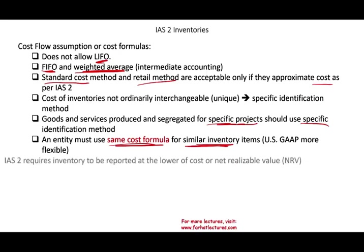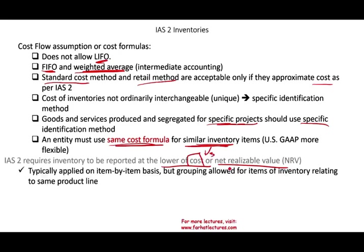IFRS and IAS 2 require inventory to be reported at lower of cost or NRV — net realizable value. You compare your cost versus NRV and select whichever is lower. So after you determine your inventory using FIFO or weighted average, you then assign a dollar amount using either the original cost or NRV, whichever is lower. Typically you apply this lower of cost or NRV on an item-by-item basis.